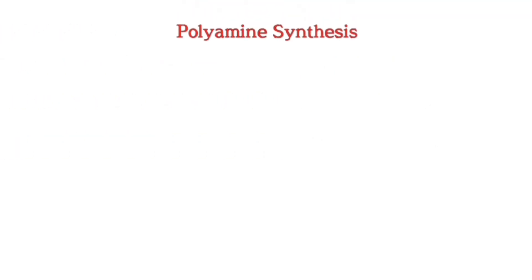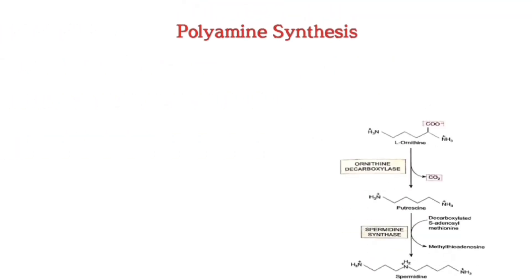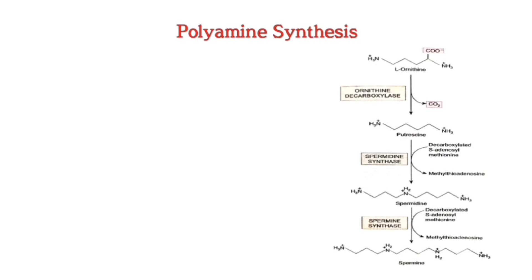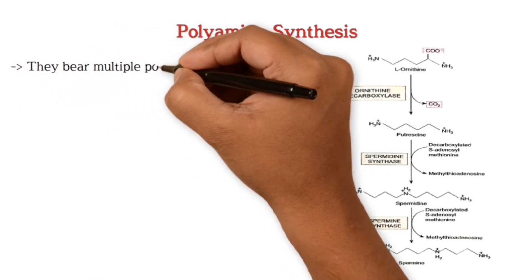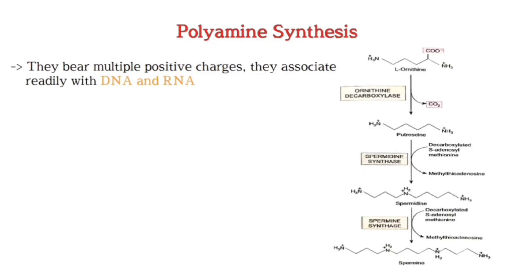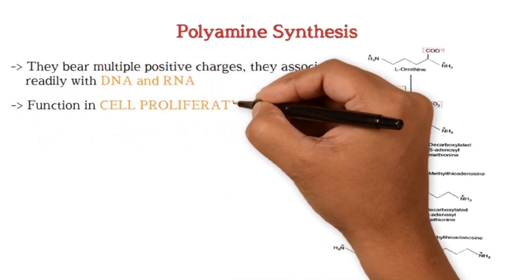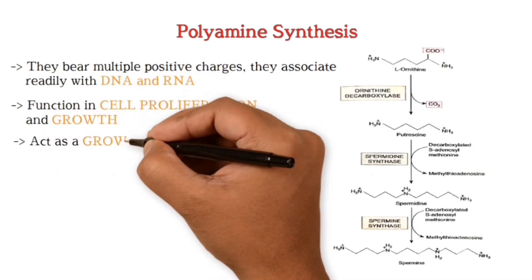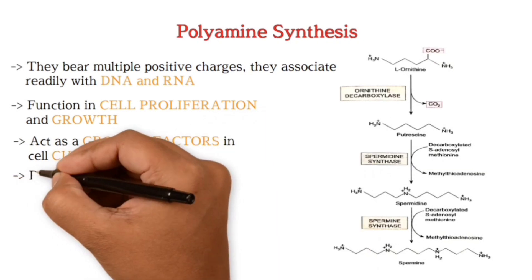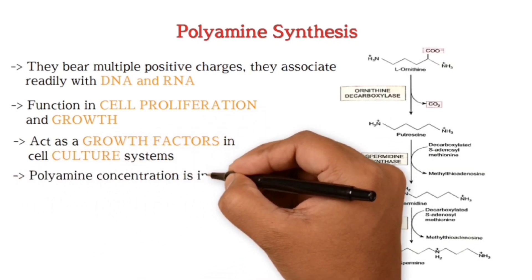Now we'll see polyamine synthesis. Polyamines are organic compounds having multiple amino groups. Ornithine decarboxylation forms putrescine. Decarboxylated S-adenosylmethionine donates three carbons and one amino group to form spermidine, and again to form spermine. Polyamines bear positive charges and associate readily with DNA and RNA. They have functions in cell proliferation and growth, act as growth factors in cell culture systems, and their concentration is increased in cancerous conditions.